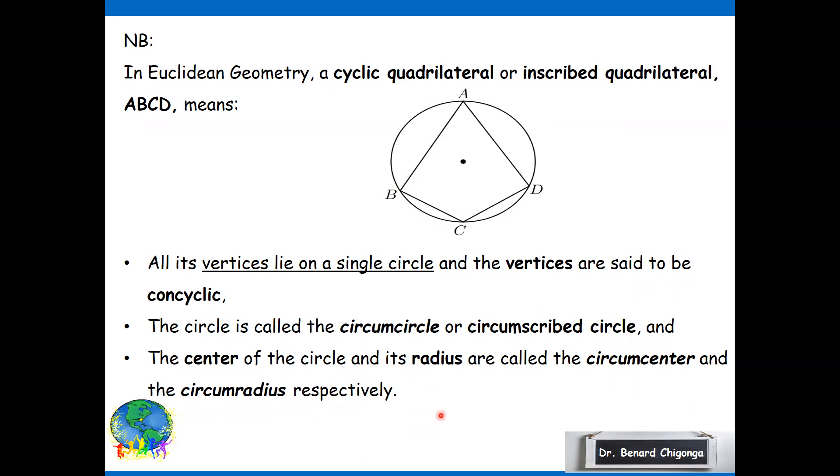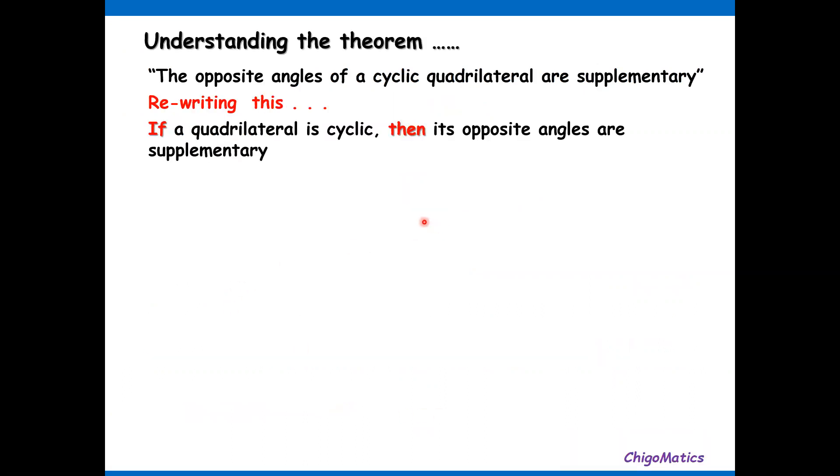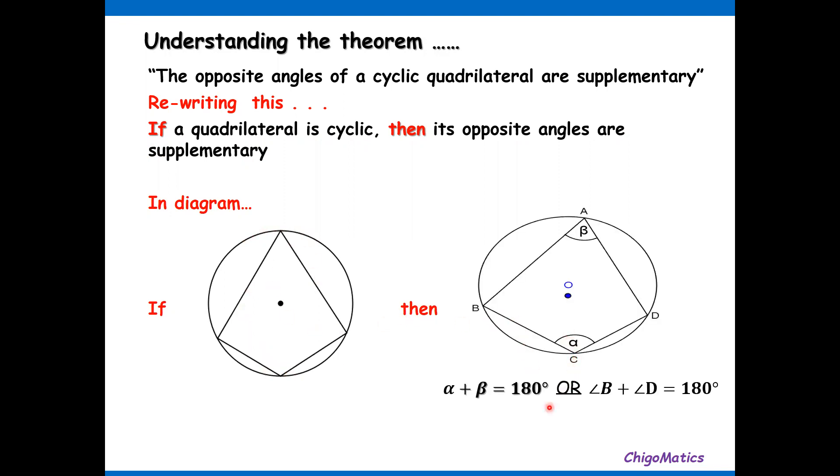Let us understand the theorem and rewrite it in if-then form. If a quadrilateral is cyclic, then its opposite angles are supplementary. In the diagram, here is a cyclic quadrilateral. Then we are saying angle alpha plus beta equals 180, or angle B plus angle D equals 180. That means they are supplementary, and the given and required to prove gives you the hypothesis and the conclusion respectively.